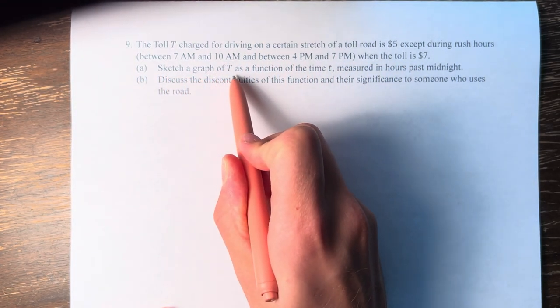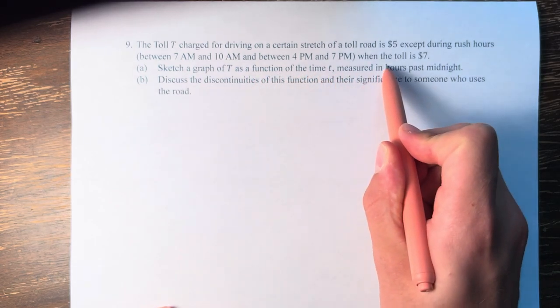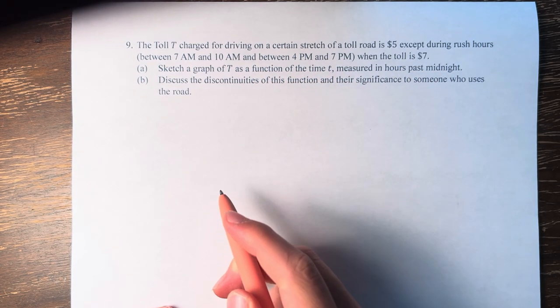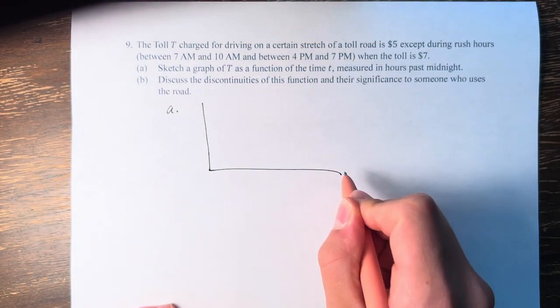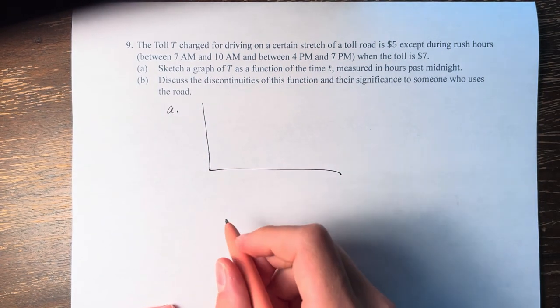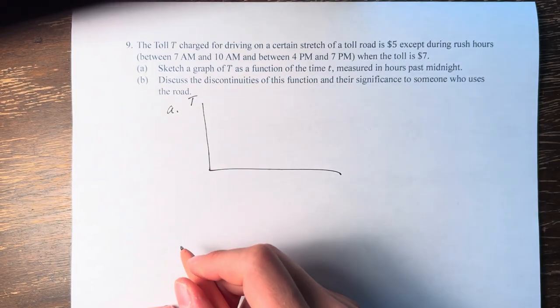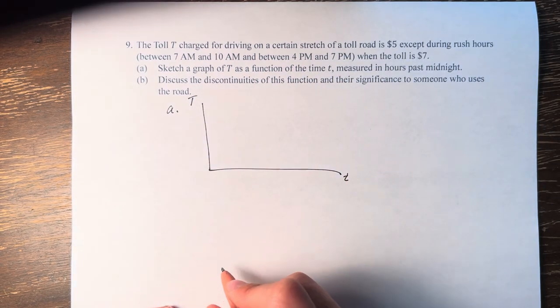First, we need to sketch a graph of t as a function of the time t measured in hours past midnight. So we have our graph here, and it is the toll cost t over time t hours since midnight.